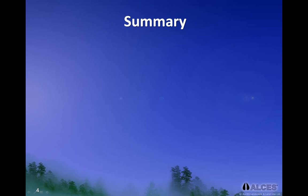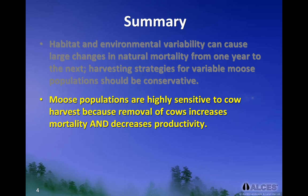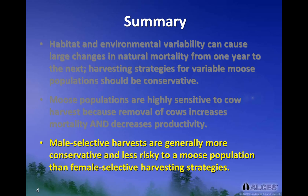In summary, I would like to leave you with three take-home messages. Firstly, habitat and environmental variability can cause large changes in natural mortality from year to year; therefore, harvesting strategies for variable moose populations should be conservative — that is, we should err on the side of caution. Secondly, moose populations are highly sensitive to cow harvest because removal of cows increases mortality and decreases productivity. And finally, male-selective harvests are generally more conservative and less risky to a moose population than female-selective harvesting strategies.